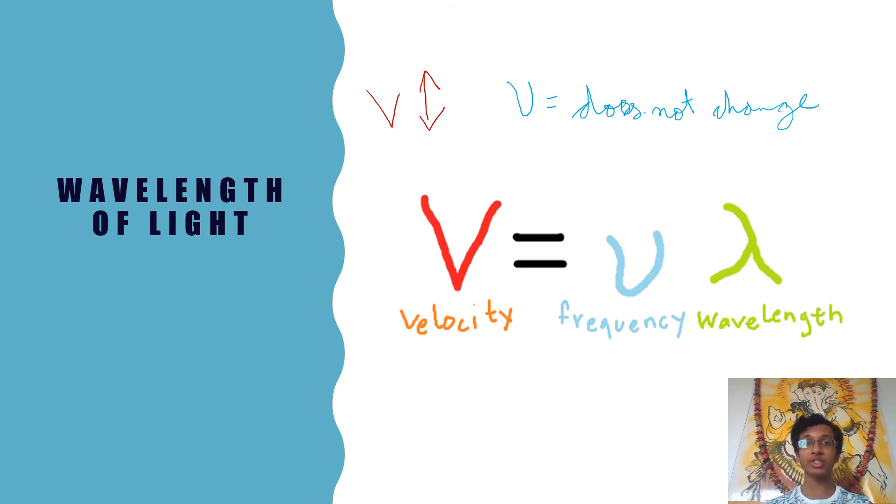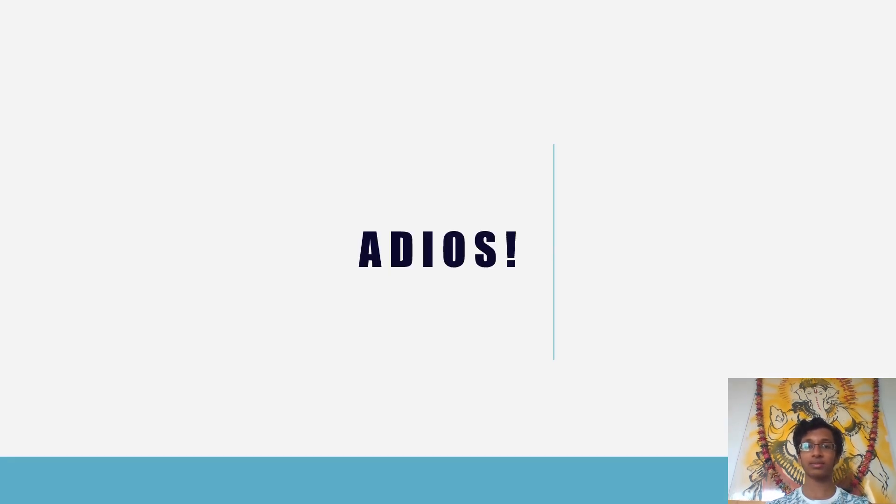Frequency is a property of the source of the electromagnetic wave and is thus not affected by refraction, meaning that only the wavelength of light changes alongside velocity. For a given source, frequency is constant.